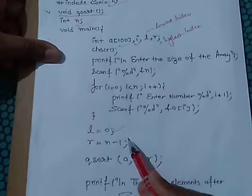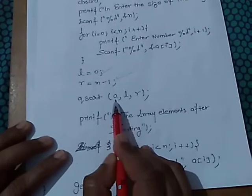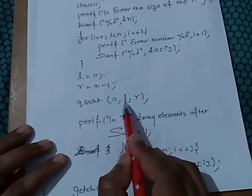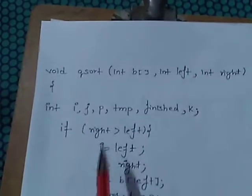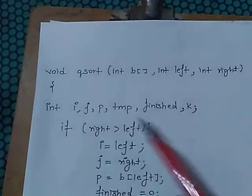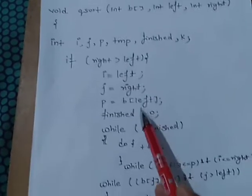Now l equal to 0, r equal to n minus 1. Now the array name, first index, and the last index is passed to this function. This function is defined here and the logic is implemented in this function.